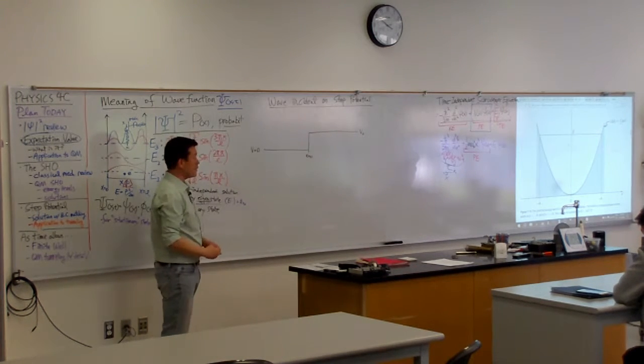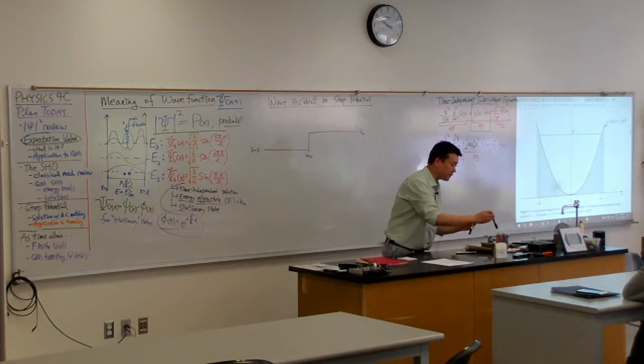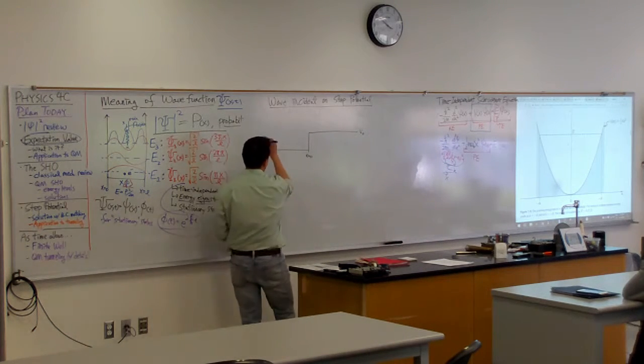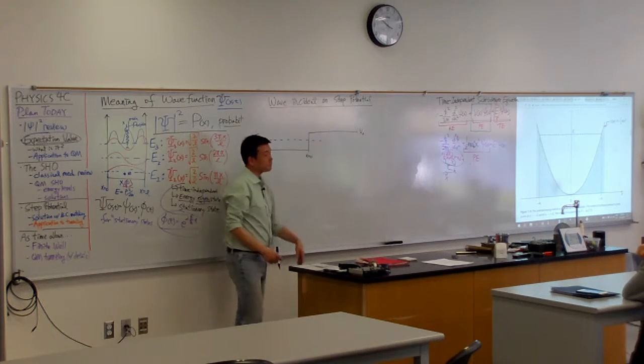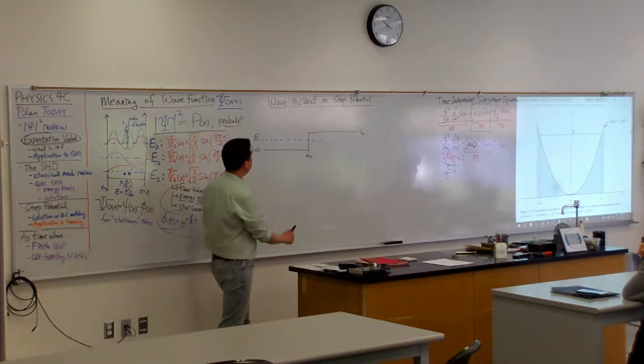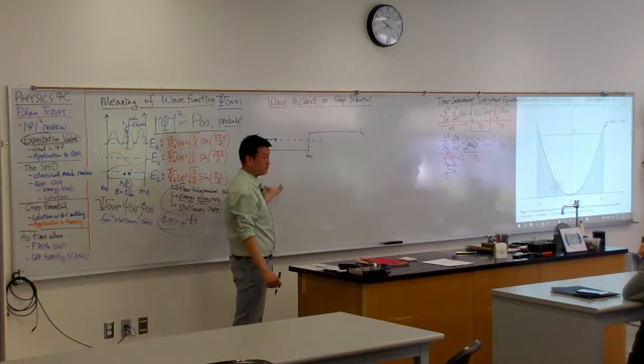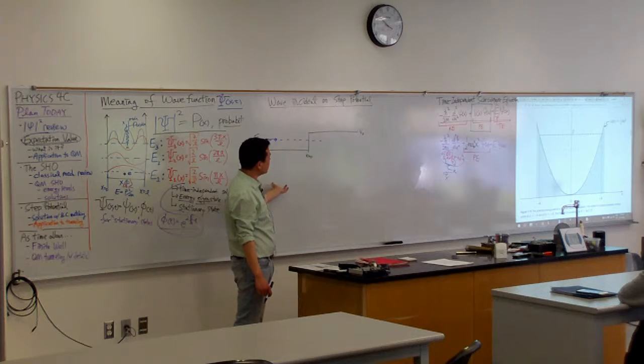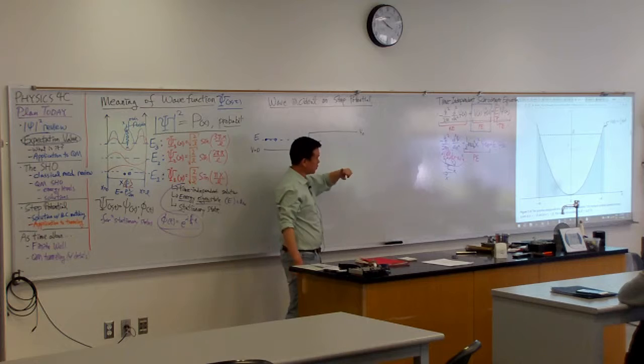And we can consider particles of different energies incident on this potential. Let's say if the energy of the particle was below this step size, what would you expect the overall behavior of this particle that's incident on it to behave like? Small possibilities for it to overcome it. Really? Any possibility for it to overcome? Small possibilities. It's actually going to be zero.